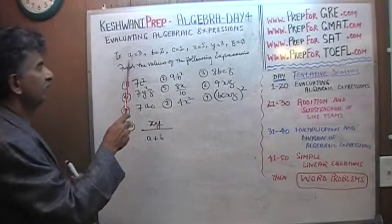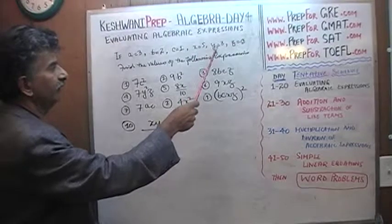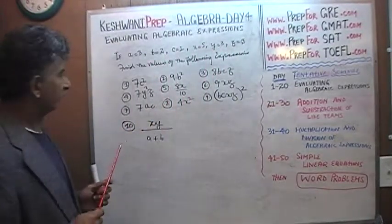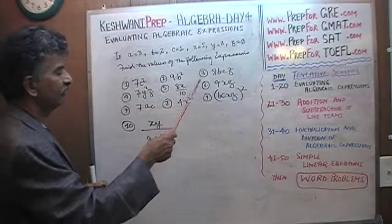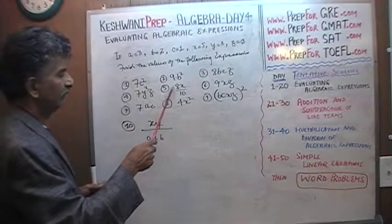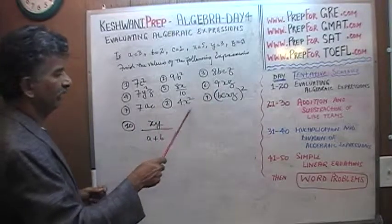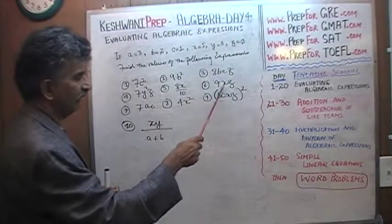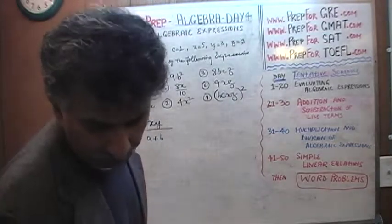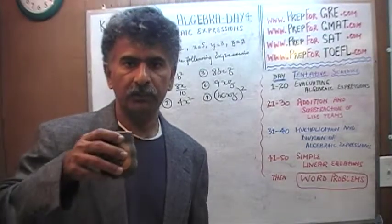If a equals 3, b equals 2, c equals 1, x equals 5, y equals 3, and z equals 0, find the values of the following expressions. Here are the expressions: 7c squared, 9b squared, 8bc times z, 7y squared z, 8x over 10, 9xz, 7ac, 4x squared, b times z times x times z whole squared, x times z over a plus b, and that's it. Pause the video. Solve the problem yourself. When you are done solving all 10 of them, you can resume the video.